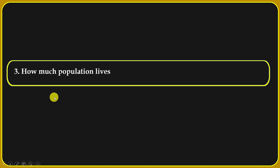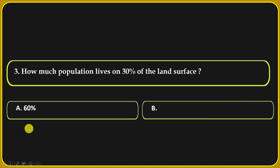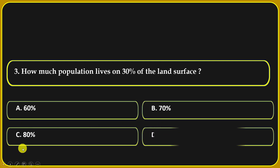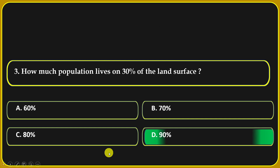How much population lives on 30 percent of the land surface? Options: 50 percent, 70 percent, 80 percent, or 90 percent. 90 percent is the correct answer.